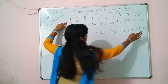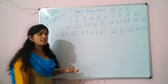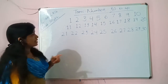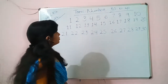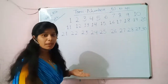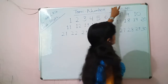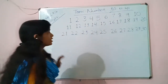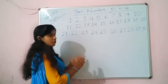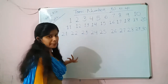Number 30. What do we do? What do we do? 1, 30. Number 30. What do we do? Previous class, I will repeat.